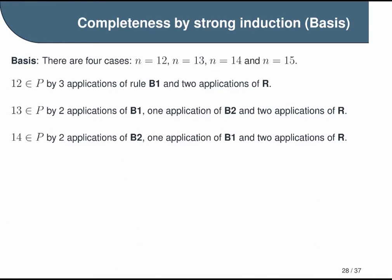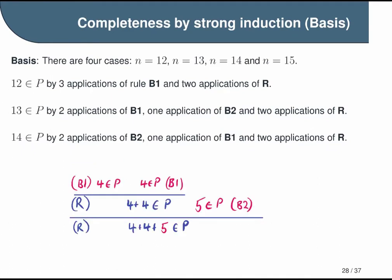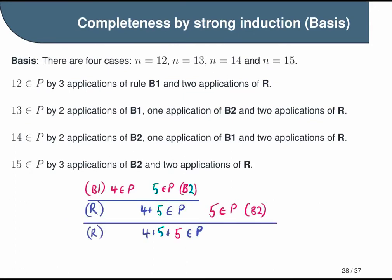By now, the rest of our strategy is probably obvious. We can modify this derivation to show that 14 is in our set by replacing one more application of rule B1 with an application of rule B2. Then we repeat that process one more time to show that 15 is also in the set. That establishes our base case.